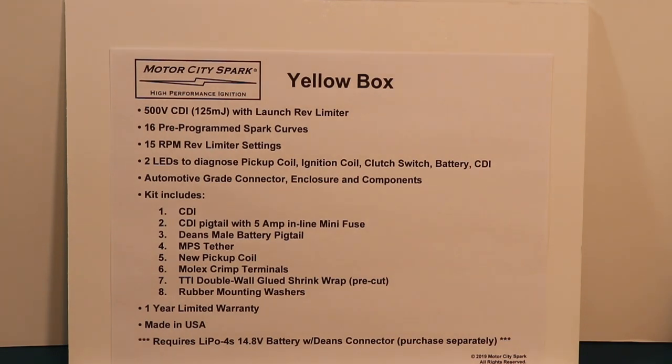It comes with Molex crimp terminals. These are good quality crimp terminals. It comes with TTI double-wall glued shrink wrap that are pre-cut. This is the nicest shrink wrap I've used. It makes your wiring waterproof, and the crimps will not come loose. We have fuel and oil-resistant rubber mounting washers that also come in the kit.